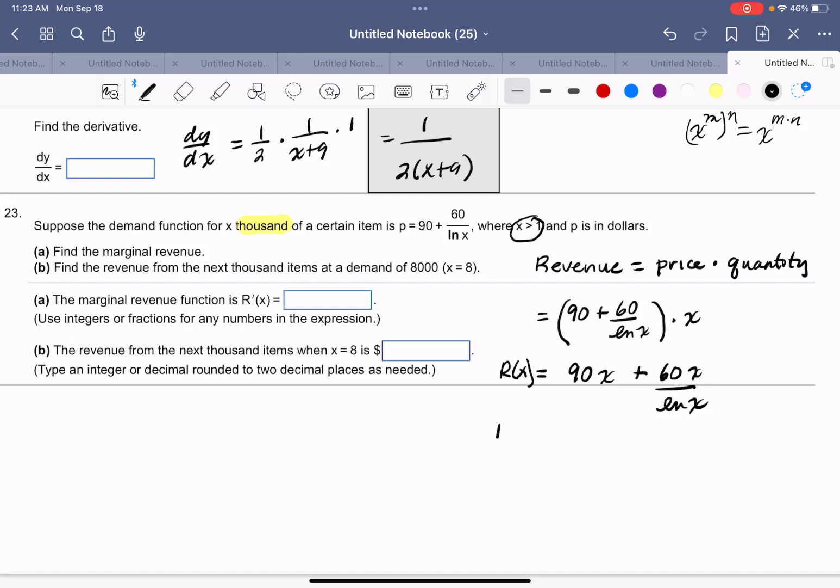Now marginal revenue just means the derivative of the revenue, and so that's going to be 90 plus, now remember this is a quotient, so we've got to do our numerator is 60x and its derivative is 60, our denominator is natural log of x and its derivative is 1 over x. So the rule says denominator times the derivative of the numerator, 60, minus the numerator times the derivative of the denominator. All of that, not the 90, but all of that is over x squared.